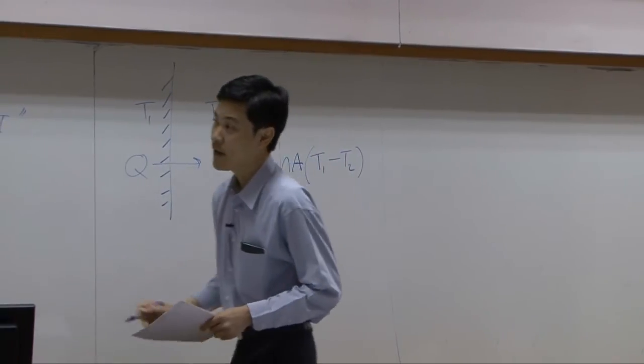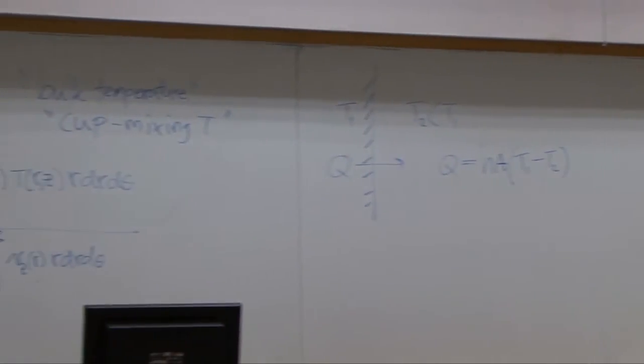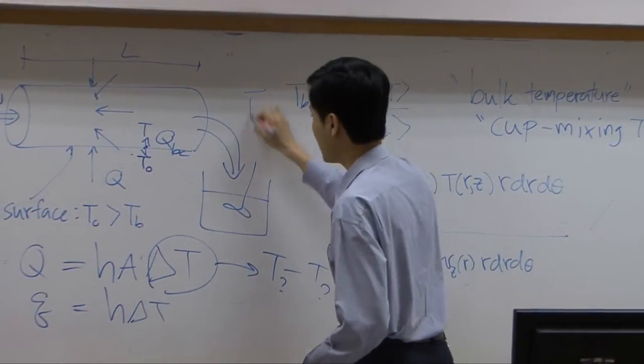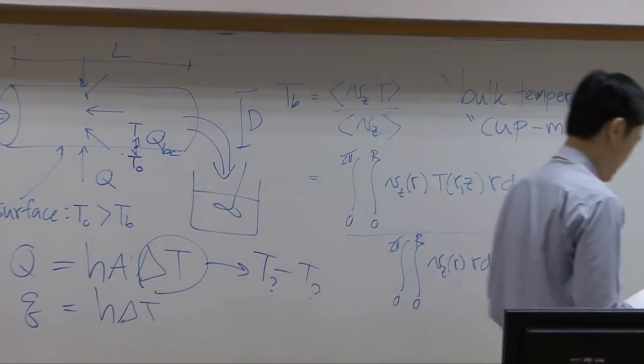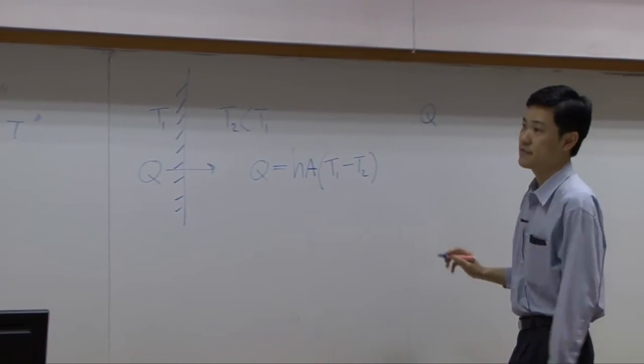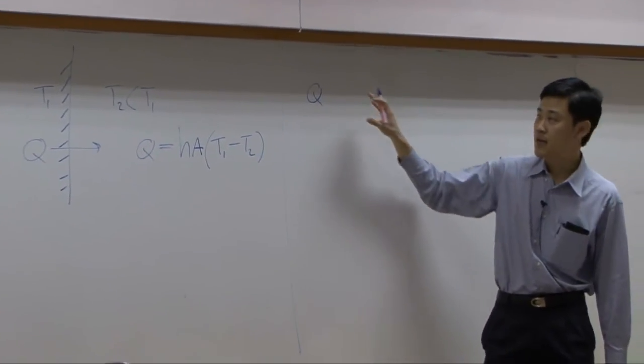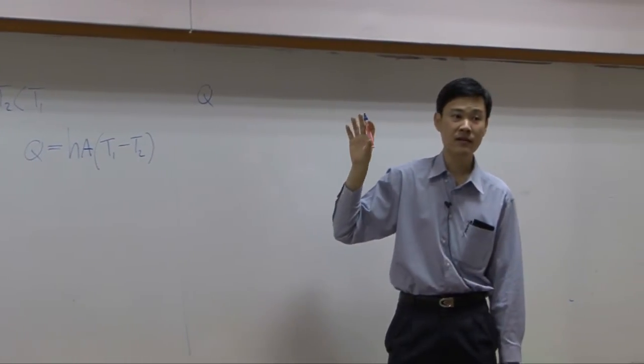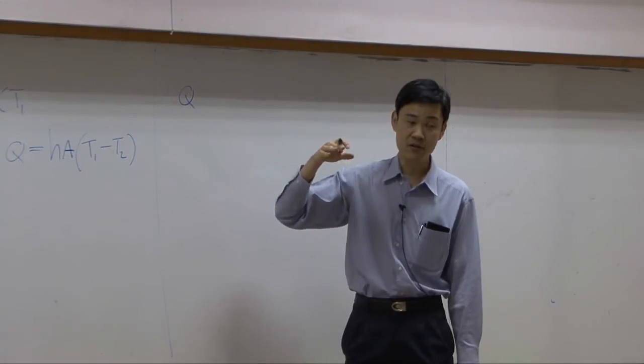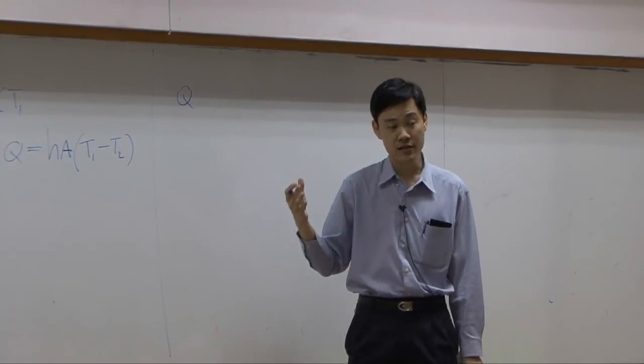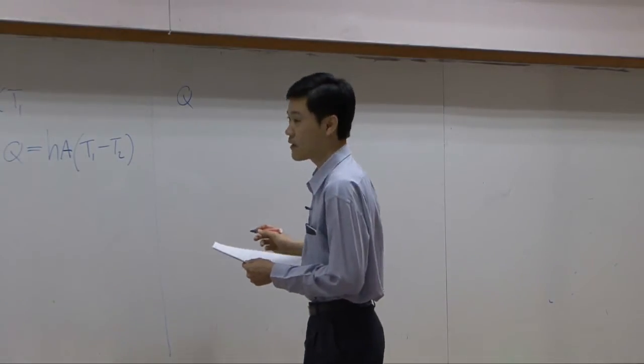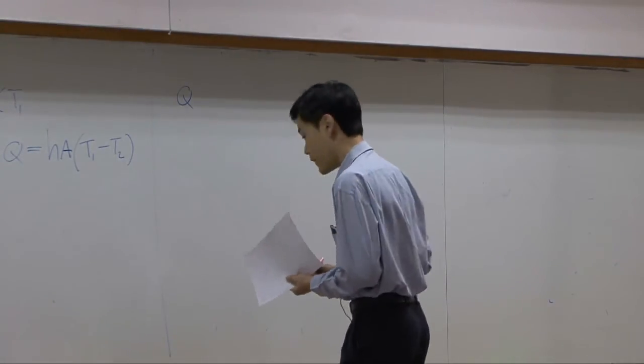If the pipe here has the length L and diameter D, we can define Q here to be total amount of heat transfer from outer surface into the fluid inside. Let's define it more clearly.